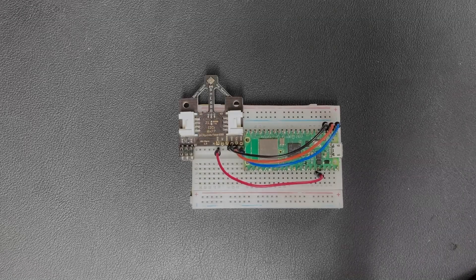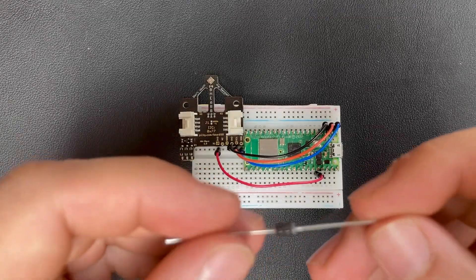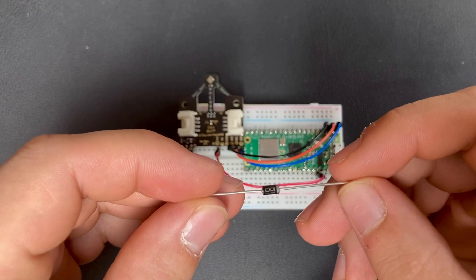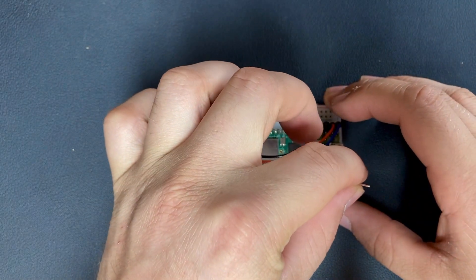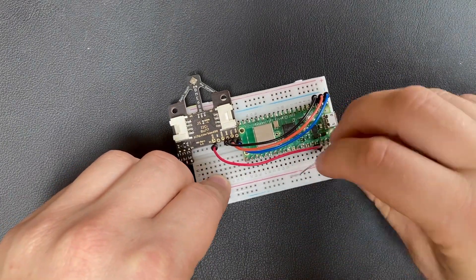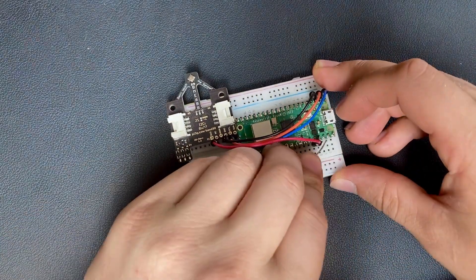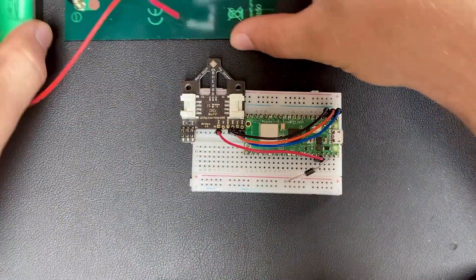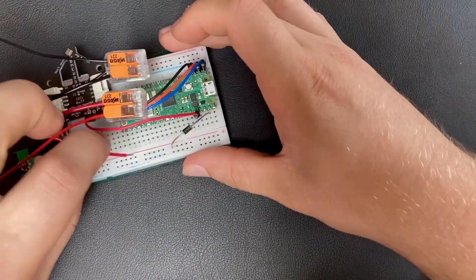Since we still want to be able to power the Pico from USB, we need to connect a Schottky diode to the V-SYS pin of the Pico W. This is pin number 2 on the right side, and you have to make sure that the gray ring on the diode is facing towards the Pico. This will prevent the Pico W from backpowering and maybe even damaging our battery.